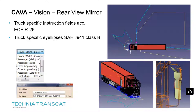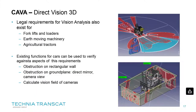KAVA also provides truck-specific eye ellipses. The eye ellipses for truck drivers differ from those for car drivers — the so-called Class B eye ellipses mentioned in SAE J941 accommodate the seating position of a truck driver. These eye ellipses are part of the KAVA delivery and can be used for truck-specific analysis, including rear view mirror checks and fields of view on the windscreen calculated with truck-specific eye ellipses.